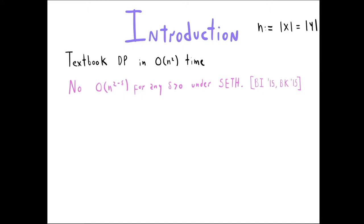What do we know about computing the edit distance? There is a textbook dynamic program which computes it exactly in time n squared, where n denotes the length of x, assumed equal to the length of y. One of the main results of fine-grained complexity was showing that this algorithm might be optimal — more precisely, under the strong exponential time hypothesis there is no truly sub-quadratic time algorithm.